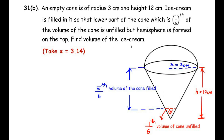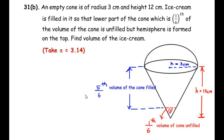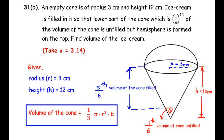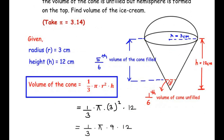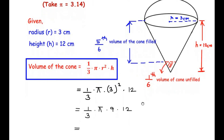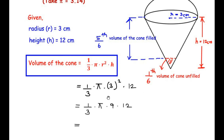The total volume of ice cream equals (5/6) × volume of cone + volume of hemisphere. Given r = 3 cm and h = 12 cm, the volume of the cone = (1/3)πr²h = (1/3) × π × 9 × 12. Simplifying, 3 and 12 cancel to give 4, so 9 × 4 = 36π. The total volume of the cone is 36π cm³.